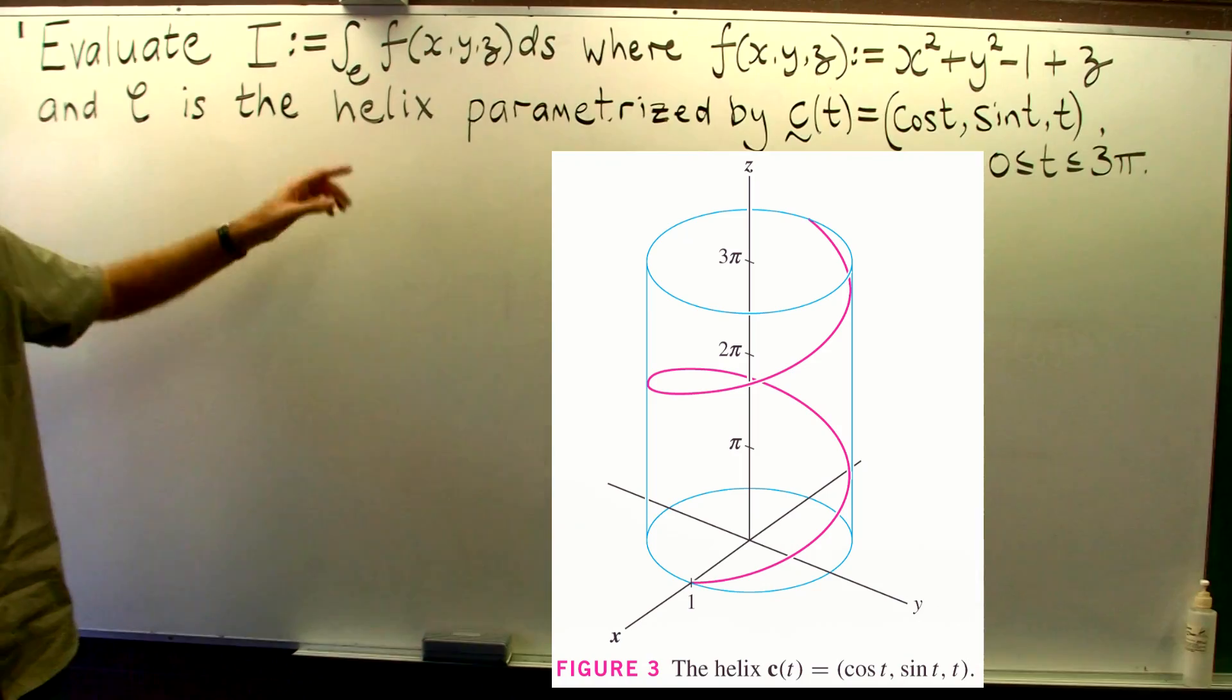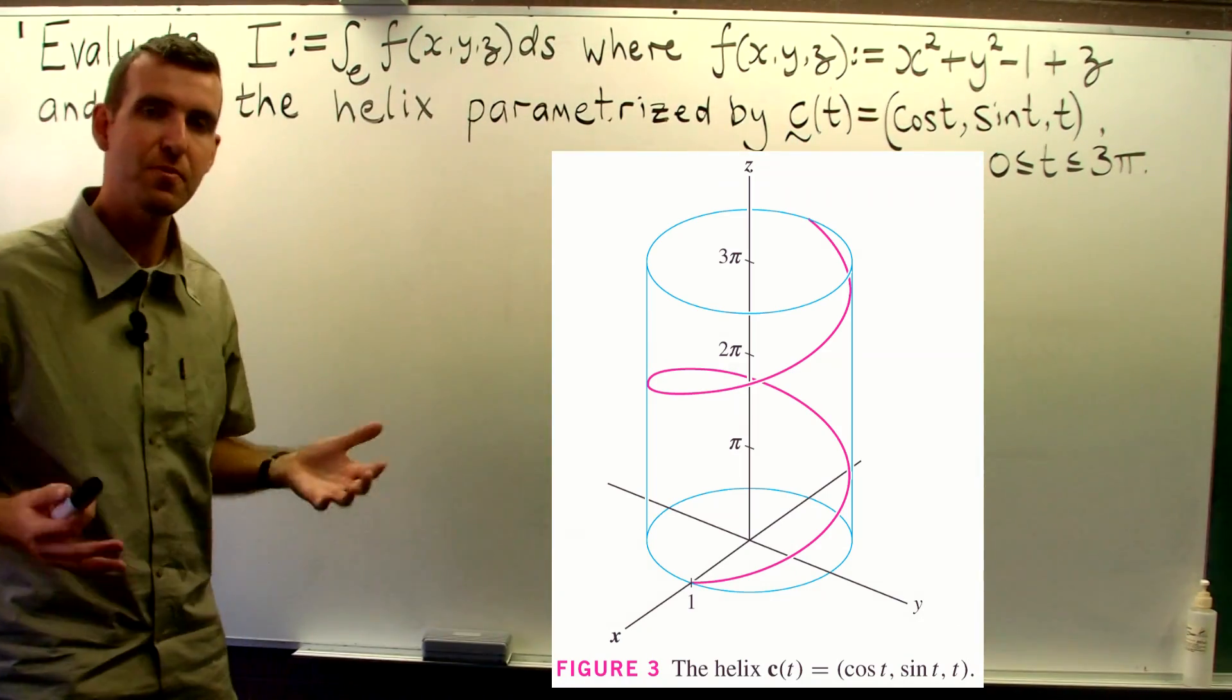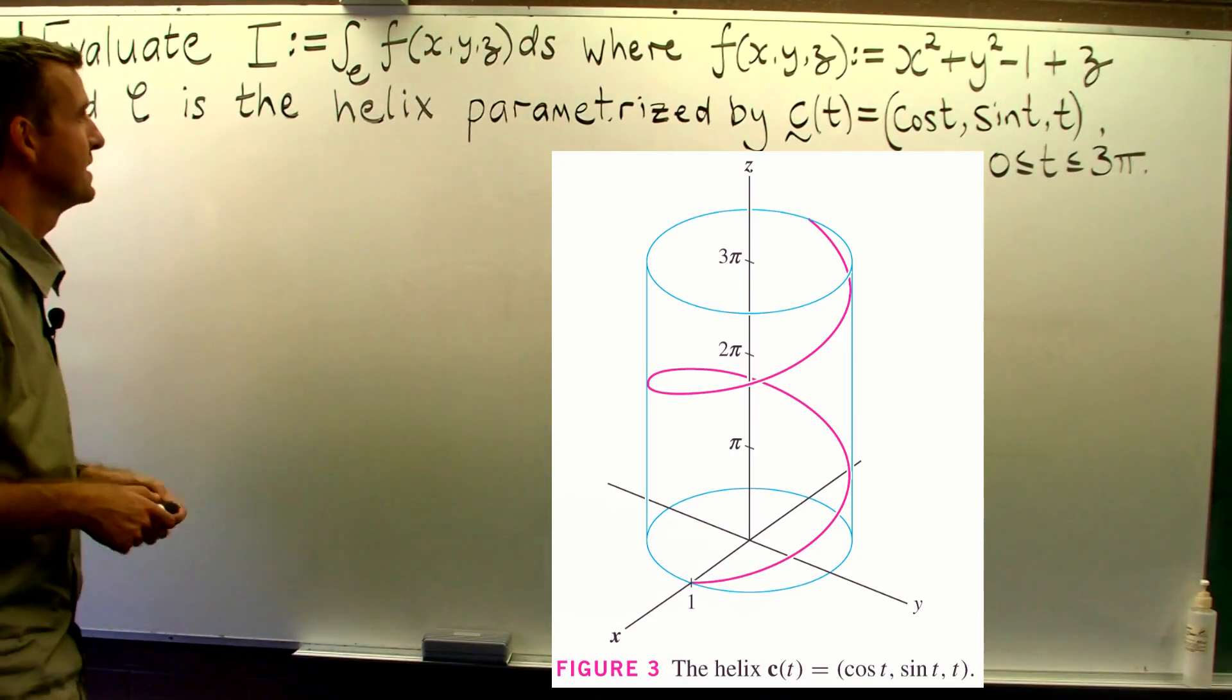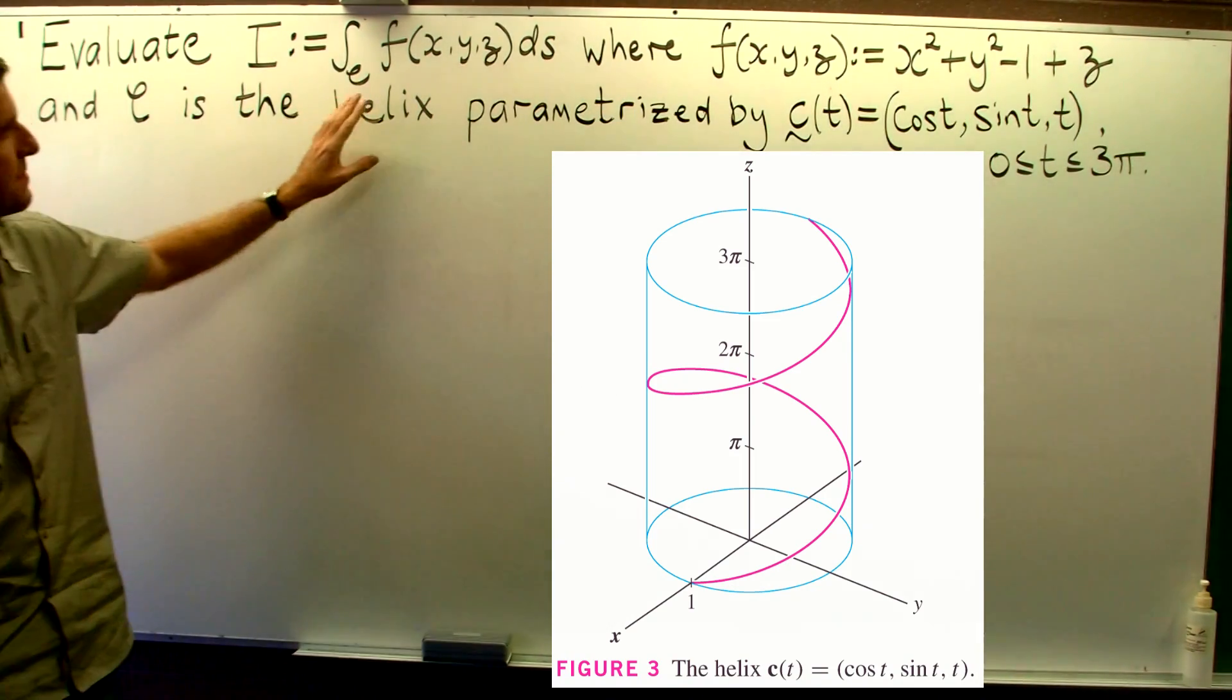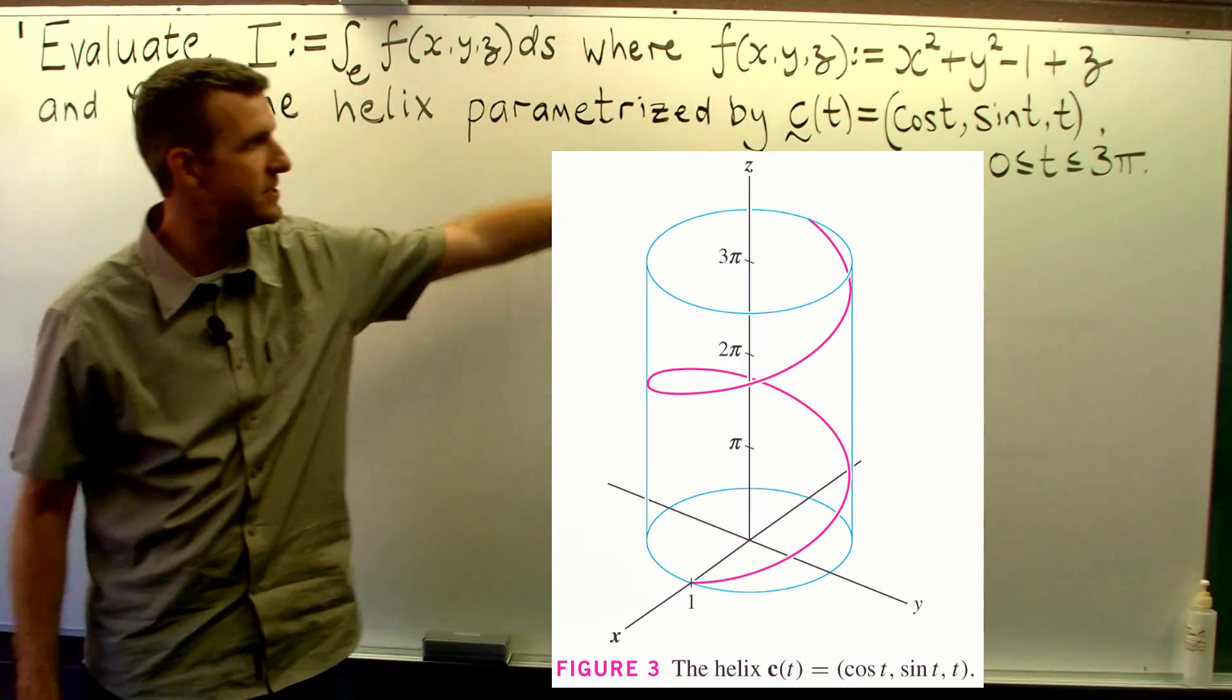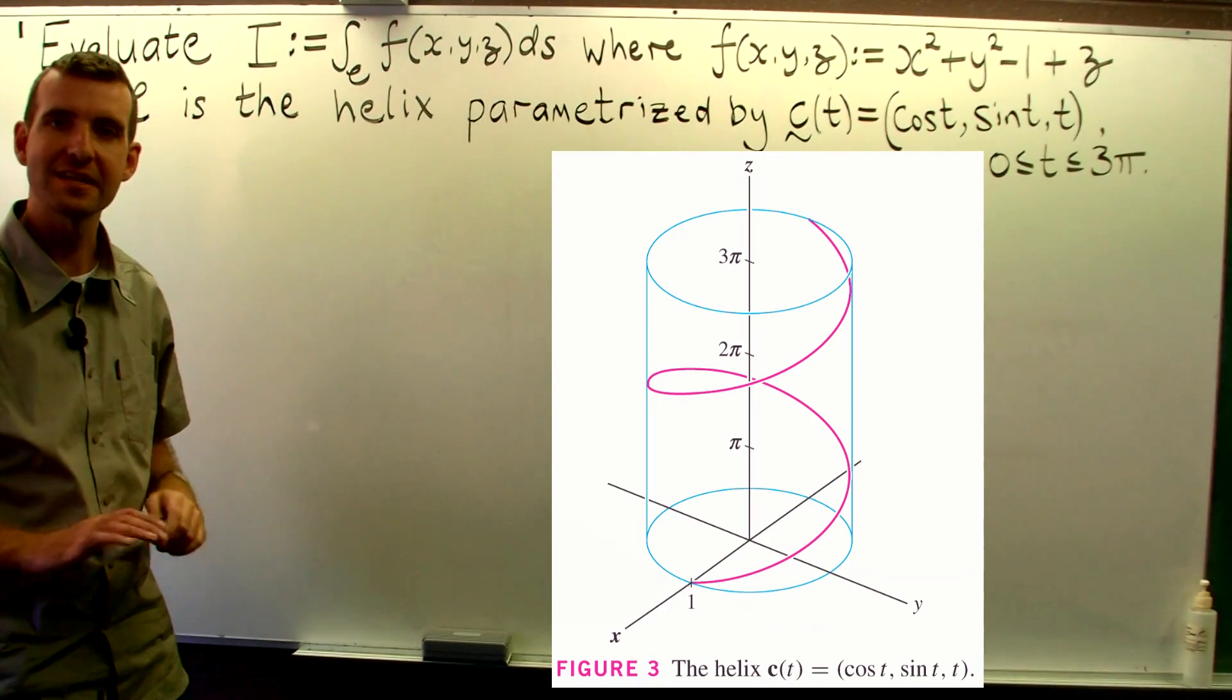And this particular helix is parameterised by this vector function. So when we say parameterised, we mean described by. Alright, so essentially what we're doing here, we are integrating our given function f over the helix with this particular description. And we're integrating with respect to the arc length.